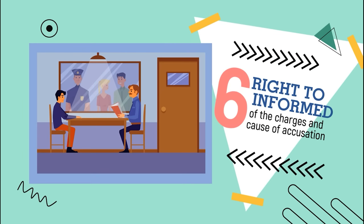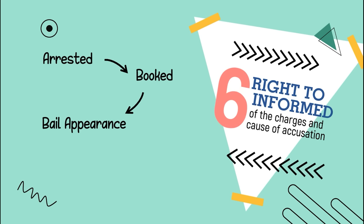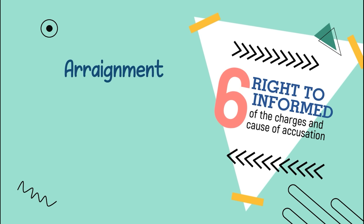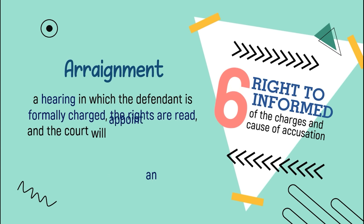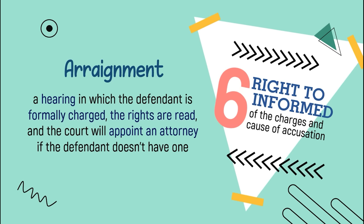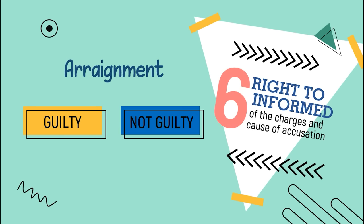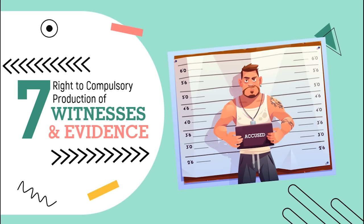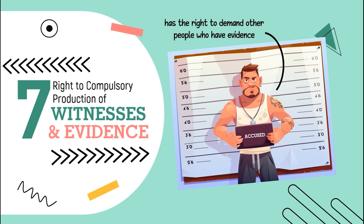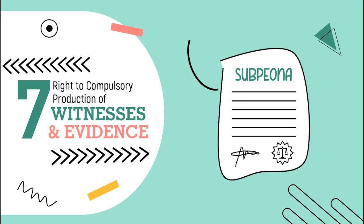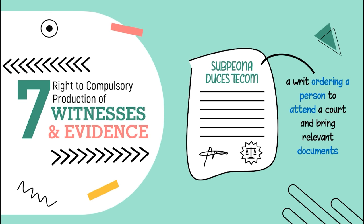Number six, the right to be informed of the charges and costs of accusation. The accused person will be informed of the charges against him. After a defendant is arrested, booked, and a bail appearance is completed, the defendant will then be arraigned. The arraignment is a hearing in which the defendant is formally charged, rights are read, and the court will appoint an attorney if the defendant doesn't have one. During the arraignment, the defendant can plead either guilty or not guilty. Next, the right to compulsory production of witnesses and evidence. The accused has the right to demand other people who have helpful evidence to appear in court. The judge may issue a subpoena — a writ ordering a person to attend the court — or a subpoena duces tecum — a writ ordering a person to attend court and bring relevant documents.